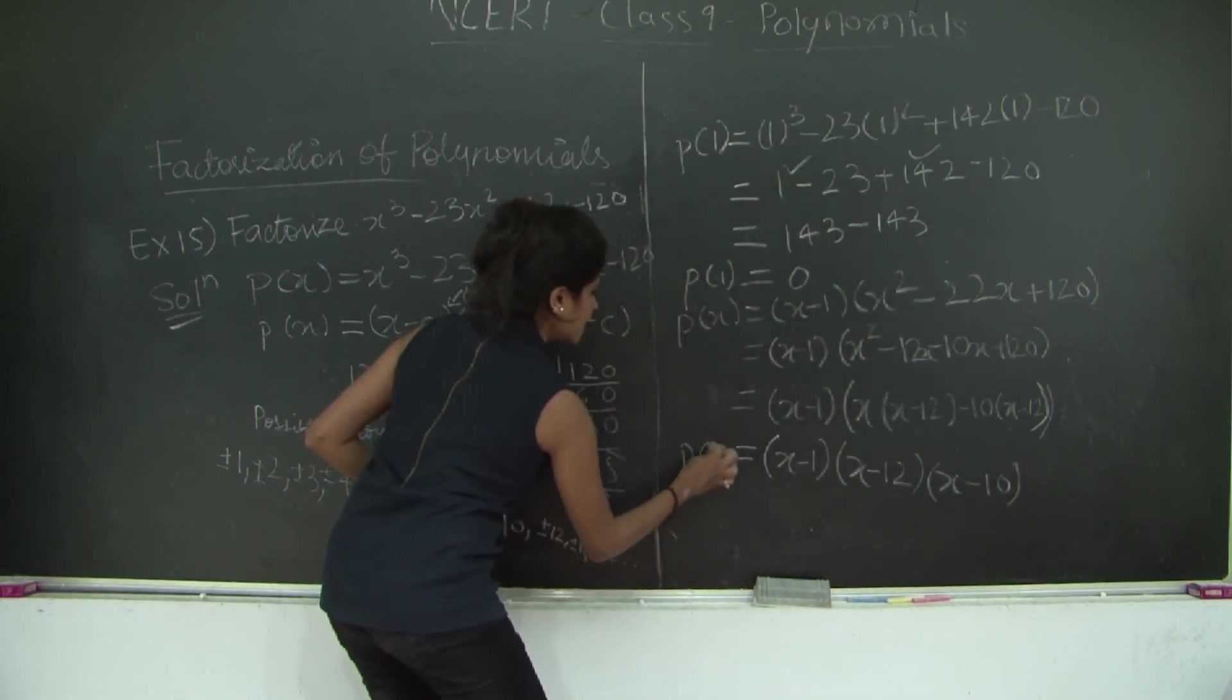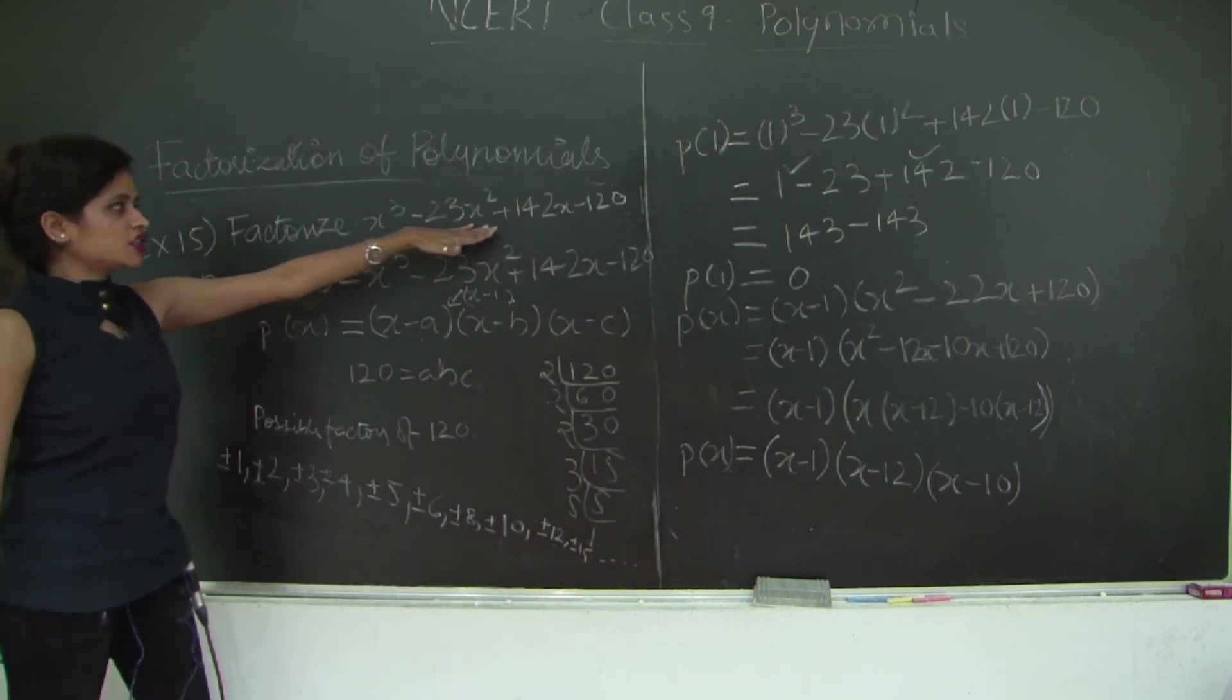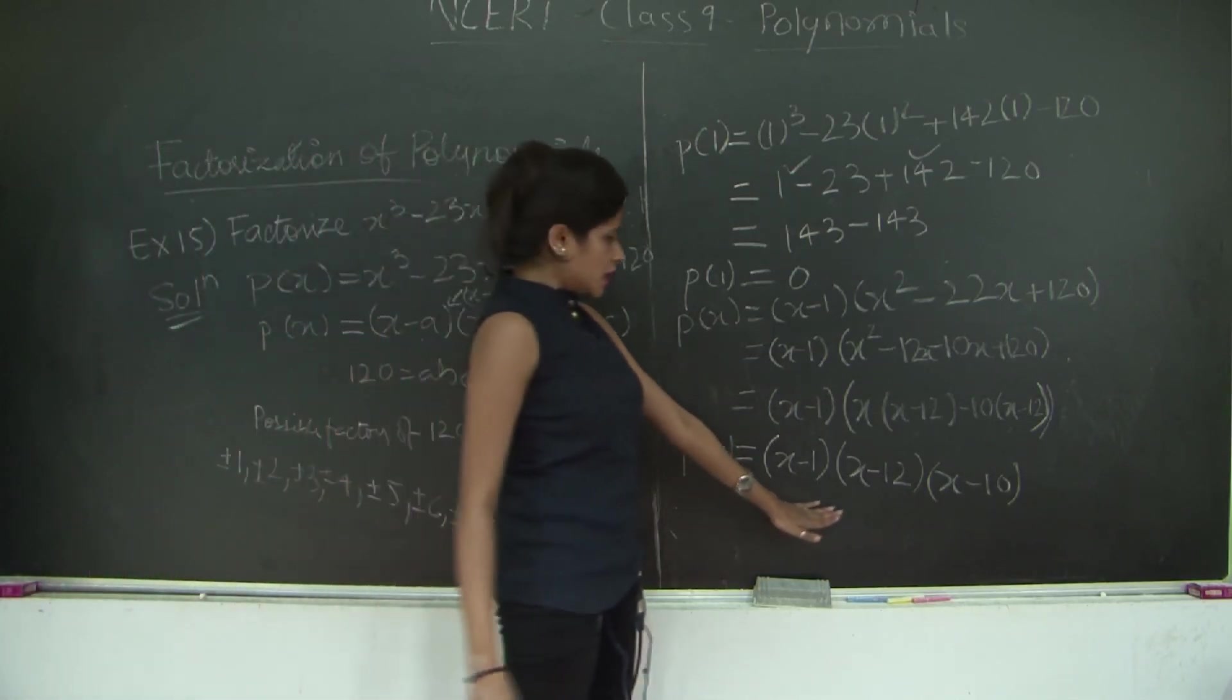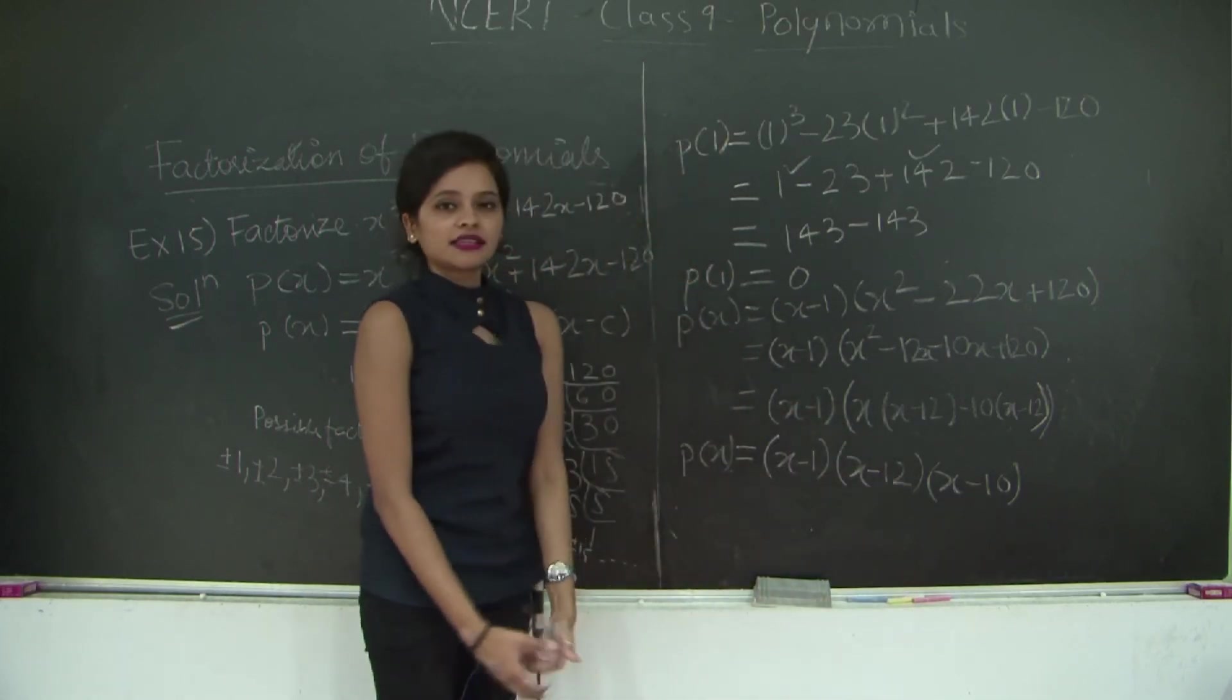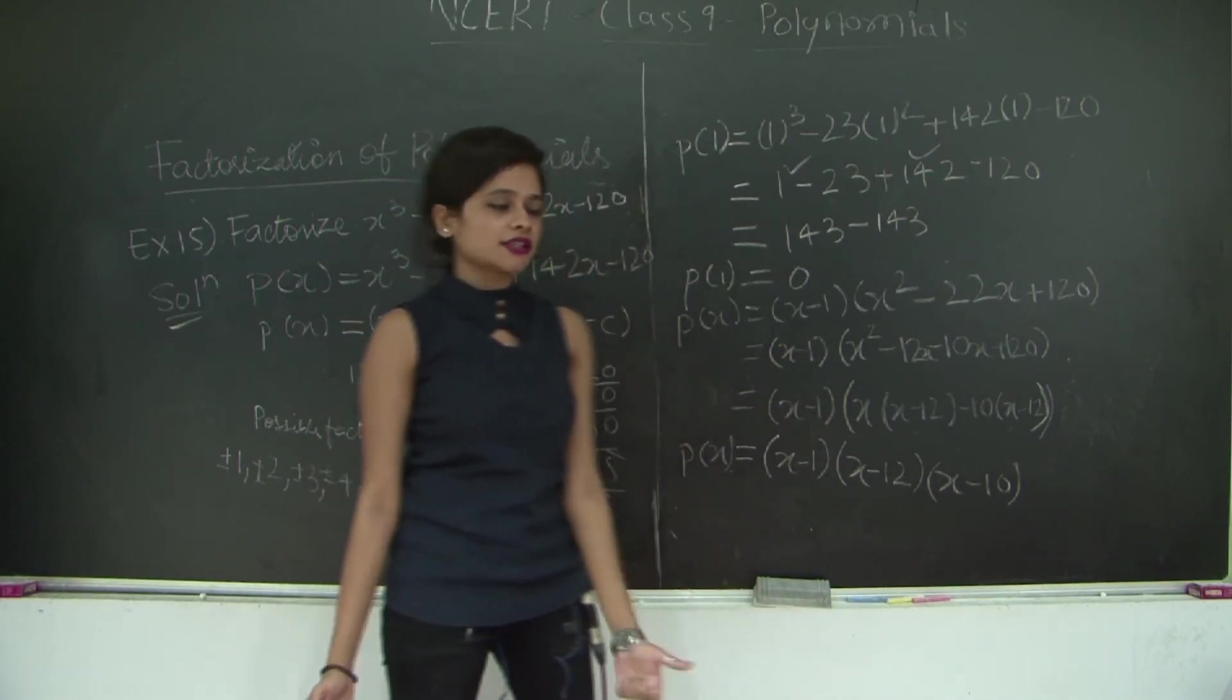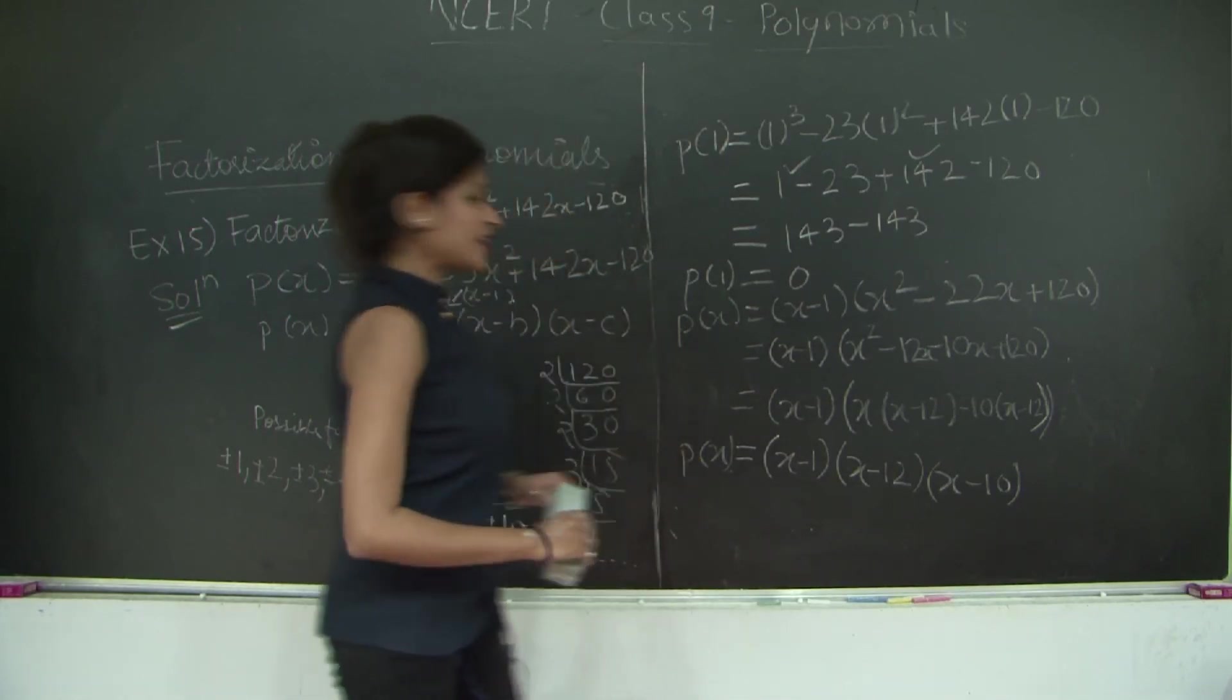This is your p(x). Therefore, we have factorized the polynomial x³ - 23x² + 142x - 120 into three factors: (x - 1)(x - 12)(x - 10). With this, we wind up with the solved examples related to factorization of polynomials. In the next class, we will solve exercise 2.3. Thank you.